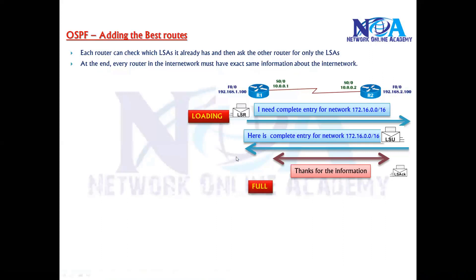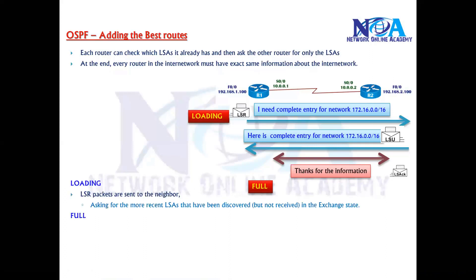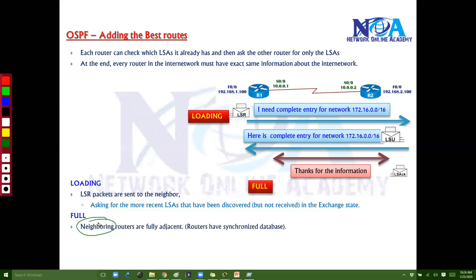Finally, it comes to the full stage. The full stage means the database is synchronized and both routers have the same database. In the loading stage they sent out requests asking for the most recent LSAs discovered that had not been received in the exchange state. In the full stage, the neighbors are adjacent — both routers now have a common synchronized database.